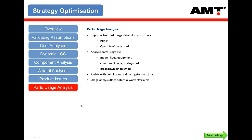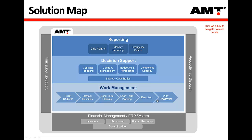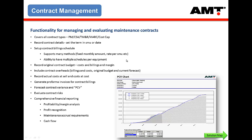There is also a parts usage analysis module, but that hasn't been enabled for this phase. That's the strategy optimization — one of the bigger areas within AMT. There is also the contract management side, covering all your contract financial reporting. It covers a lot of similar functionality to Analyzer but with much more, including greater flexibility within AMT to handle different contract types, billing methods, and more analyses of cash flows, margins, and profit recognition.